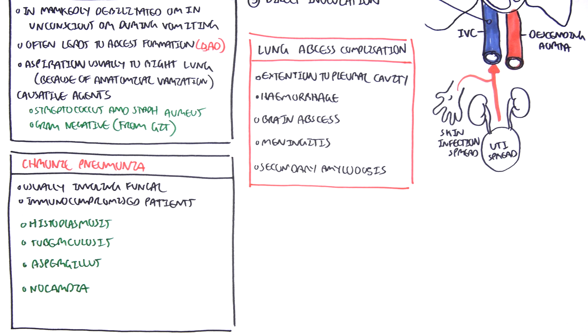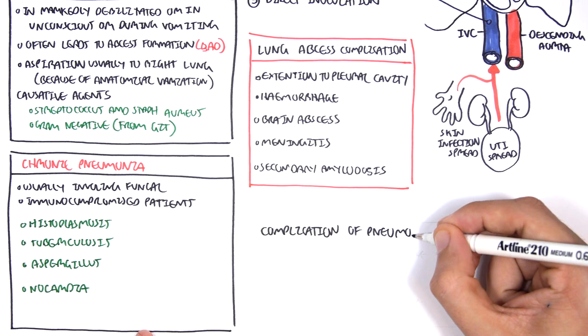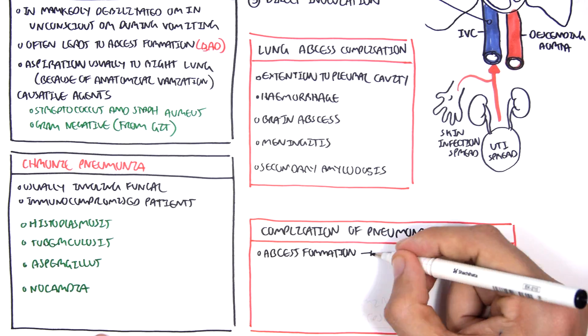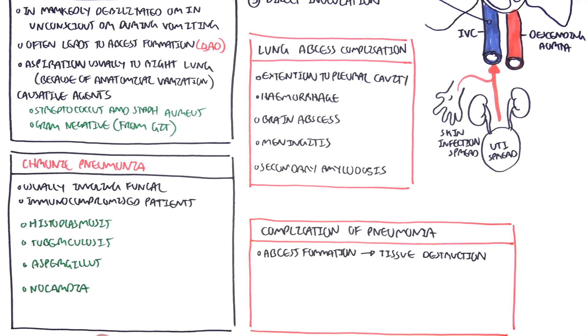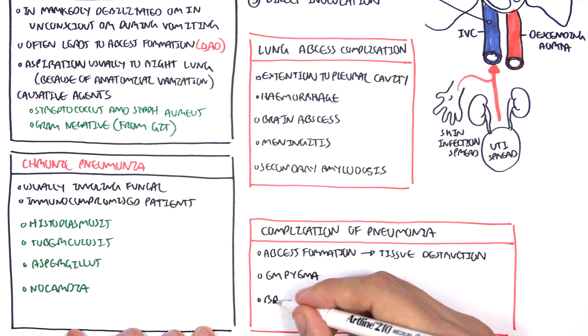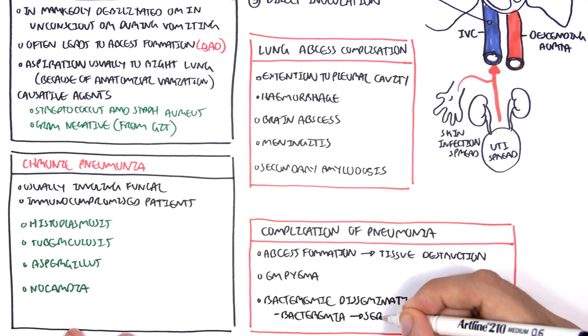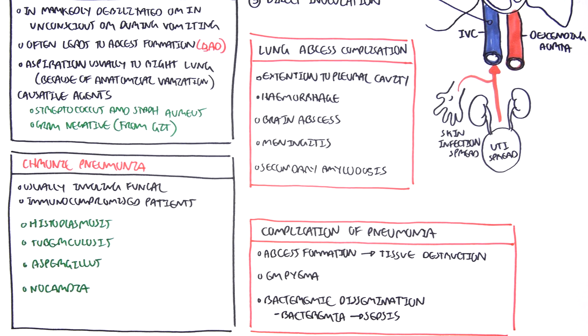And there can be complications of pneumonia. These are abscess formation, as we have just talked about, because it's dangerous. Abscess formation leads to tissue destruction, amongst many other things. Empyema, as well as bacteremic dissemination. So complications of pneumonia can cause, essentially, sepsis.